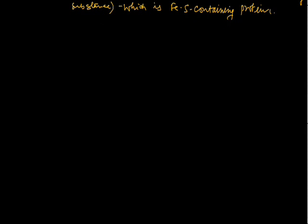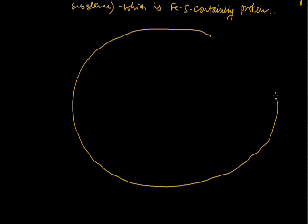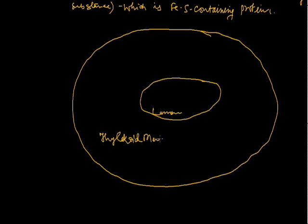Light reaction occurs in the granum portion. If you draw a diagram of granum, this is the thylakoid membrane. This space is lumen, and this space is stroma.